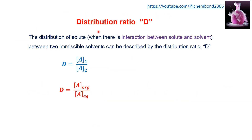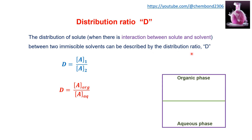There is another term called the distribution ratio D. The distribution of solute between two phases in solvent extraction involves interactions between solute and solvent, or between solute and solute, between two immiscible solvents, and is described as the distribution ratio. The interaction will be either association or dissociation — association is used for the organic phase and dissociation for the aqueous phase.